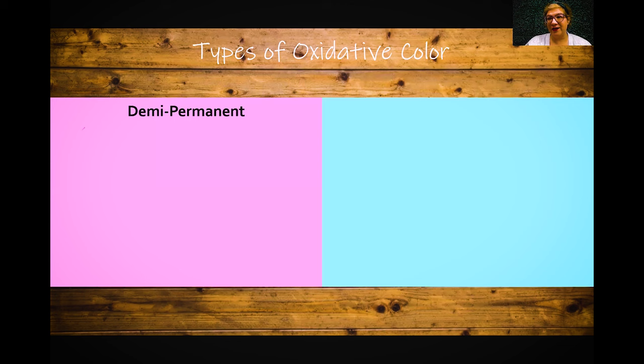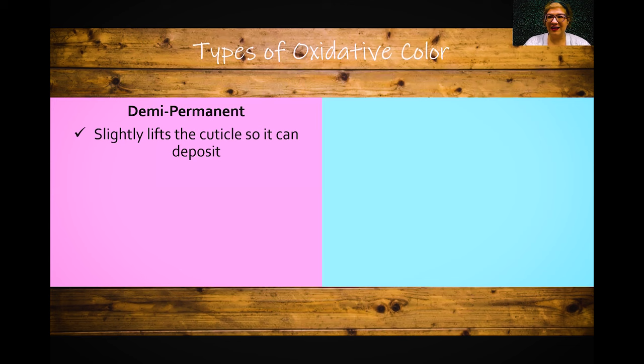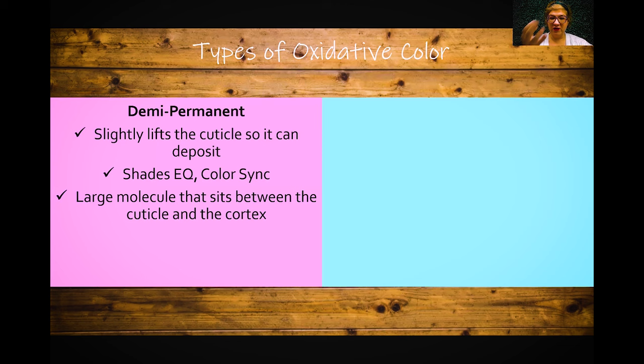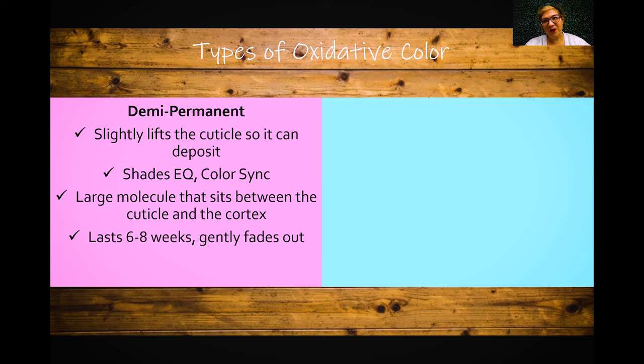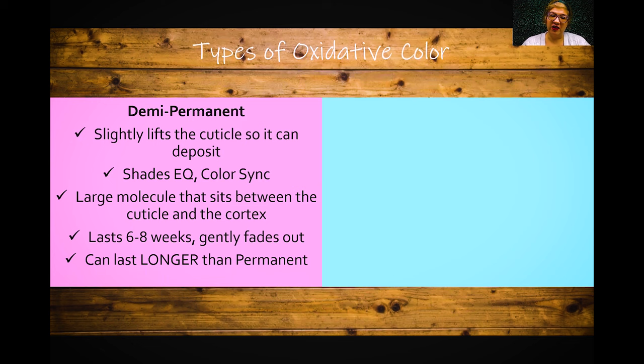Types of oxidative color: first is demi-permanent color. It slightly lifts the cuticle so it can deposit. There's no ammonia in it, but it can slide into that cuticle to stain the inner layer. This is your Shades EQ, Color Sync — pretty much every brand has a demi-permanent. It's a larger molecule that gets trapped between the cuticle and cortex layer, lasts about six to eight weeks, and gently fades. It is tone-on-tone — you are not going to lighten hair with demi-permanent color.